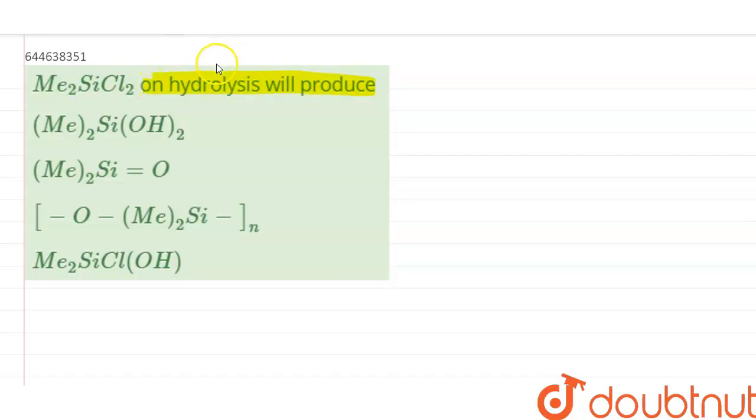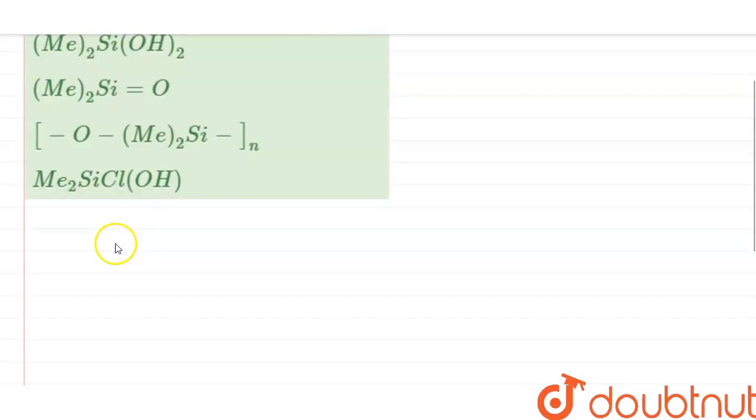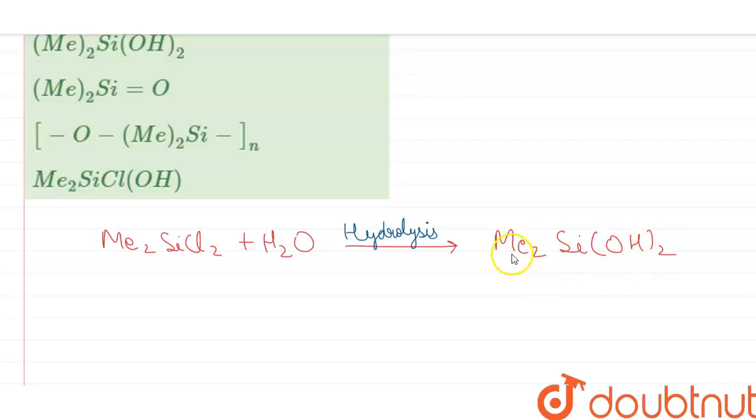So dimethyl dichlorosilane will produce on hydrolysis. Writing the reactions: Me2SiCl2 plus H2O when it goes under hydrolysis, it will produce Me2Si(OH)2. This is the first primary product formed.